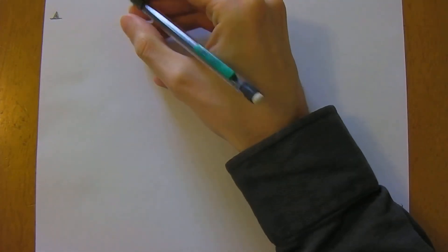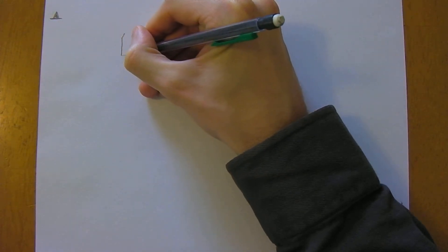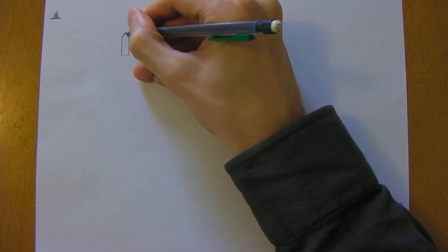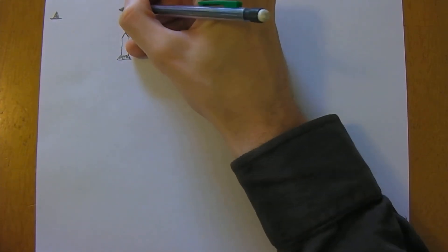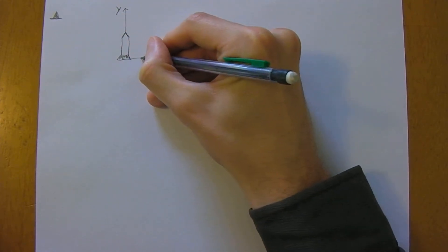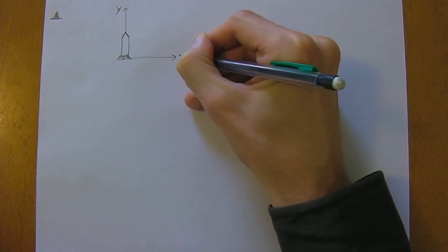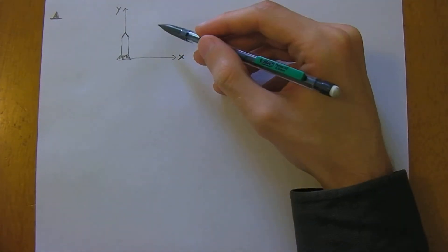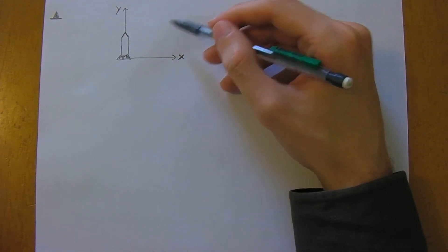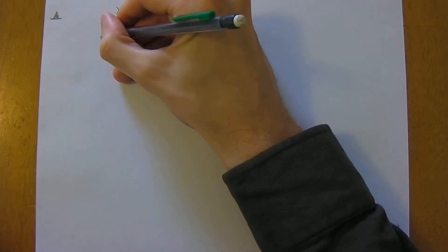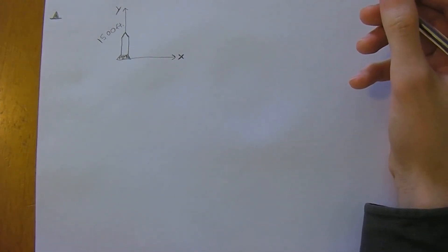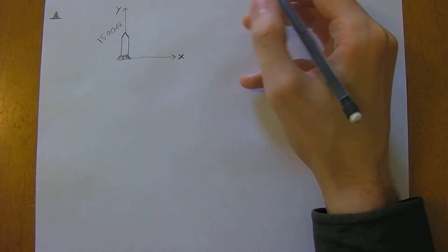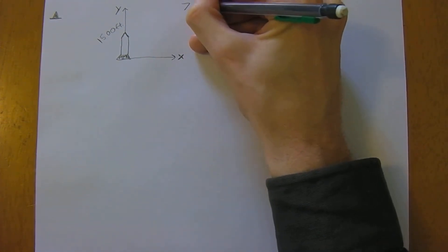We're going to set up a Cartesian coordinate system for a rocket example. If you're launching a rocket — this could be a fun model rocket — it's going to head up on the y-axis. We'll set up this arbitrary y-axis. Let's say you bought a model rocket kit and you're launching it, and the kit only tells you that the rocket travels 1,500 feet up, and the engine burns for 7 seconds.